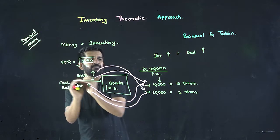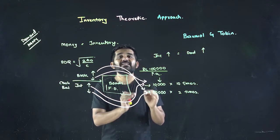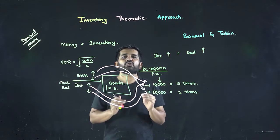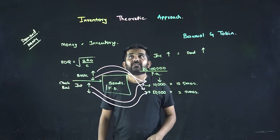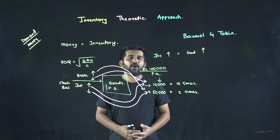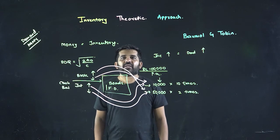And it says that people keep a cash balance as they take decisions of inventory in their business. This is the approach given by Baumol and Tobin. Thank you, friends.